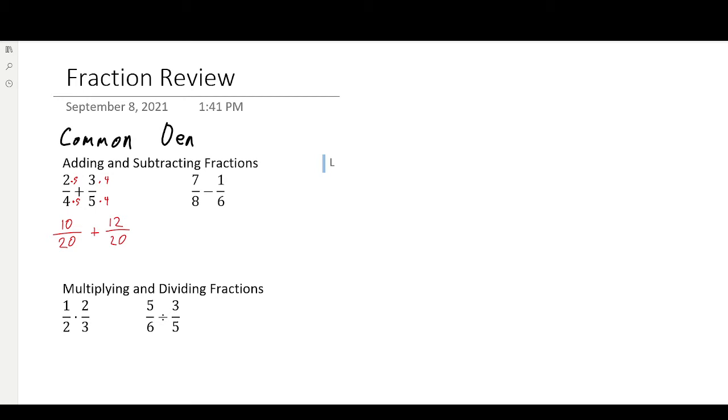Once you have that, you can actually make it out of the same denominator, so it's all over 20. So 10 plus 12 over 20. And finally, our answer is going to be 22 over 20. And if we want to simplify that, that would be 11 over 10, just dividing by 2 on the top and dividing by 2 on the bottom.